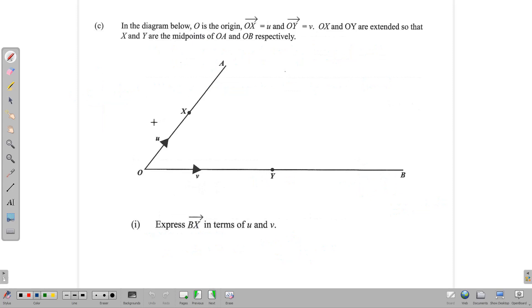Moving on, here we have a vector question, part C. In the diagram drawn below, O is the origin, OX is equal to U, so there it is OX equals U. OY is equal to V. Very good. And OX and OY are drawn longer, extended, so that X and Y are the midpoints. So this is the midpoint of OA and this is the midpoint of OB. We are to find BX in terms of U and V.